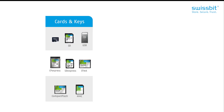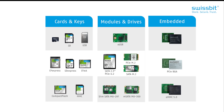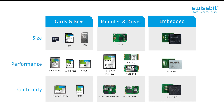Moving on, storage form factors can be divided into three main categories: cards and keys, modules and drives, and embedded non-removable system-in-package solutions. Another way to look at these form factors is their focus — either size or performance. For example, micro SD cards are desirable often because of their physical size and their removable nature, whereas an embedded PCIe BGA is often desirable because of its performance capabilities.